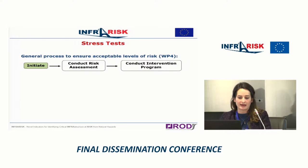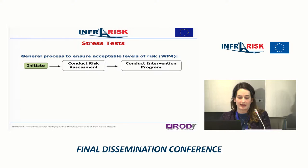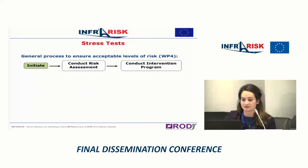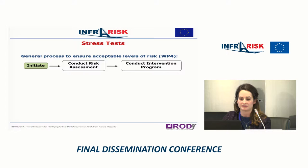I'm going to start with the general process to ensure acceptable levels of risk. This is the three steps proposed by ETH: the initiate task, then conduct risk assessment, and conduct intervention programme. In this presentation I'm going to focus on the initiate task and the conduct risk assessment task. During the project a number of GMA workshops — general morphological analysis — were held, hosted by Tom Ritchie, one of the consortium partners.